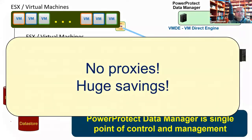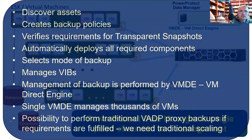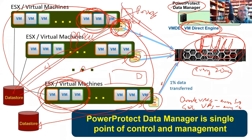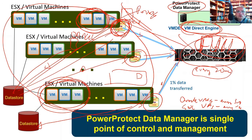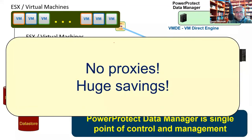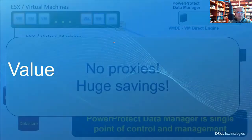No proxies at all — you see there is absolutely no proxy. Previously we needed a proxy to read data and send it on. Now the ESX server directly sends data to backup media, reading only what has changed. No impact on production, very easy, huge savings because we no longer need many proxy servers — the environment is now very simple.